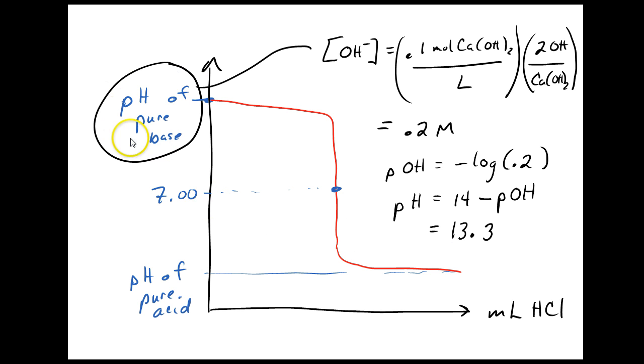First, I want to find the pH of the pure base. This is a little tricky because it's Ca(OH)2. So I'm going to have to multiply my concentration by 2. Find the pOH, and then from there I can get the pH.